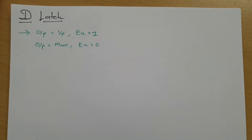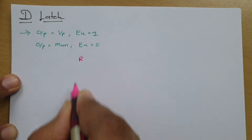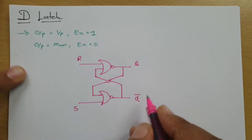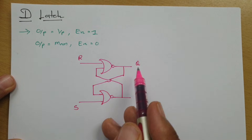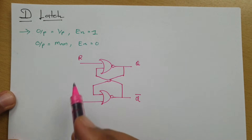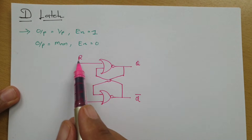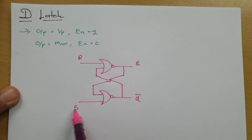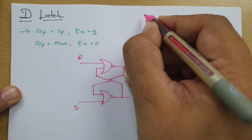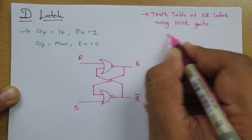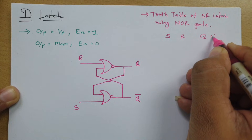To understand the basic working of D-Latch, one should know SR Latch using NOR gate. I have already explained SR Latch using NOR gate in complete detail. Here, let me draw the circuit first. We have two input terminals S and R, and output is Q and Q bar. One should not forget the order — when you make SR Latch using NOR gate, R should be with this terminal and S should be with this terminal, and output will be Q and Q bar.